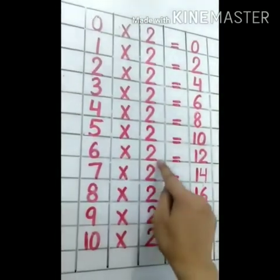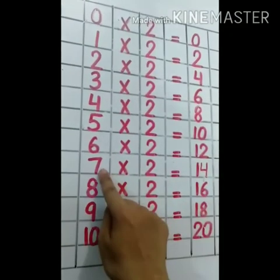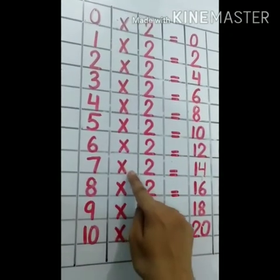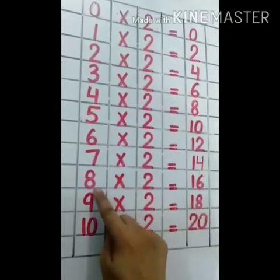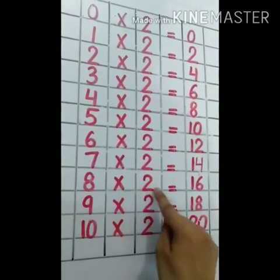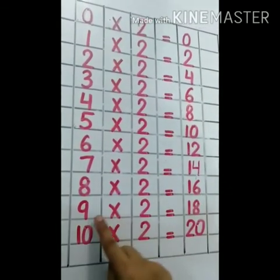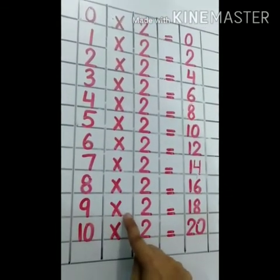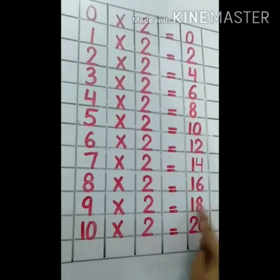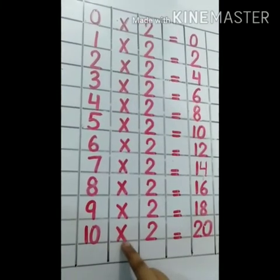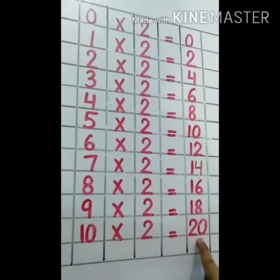Six times two is twelve. Seven times two is fourteen. Eight times two is sixteen. Nine times two is eighteen. Ten times two is twenty.